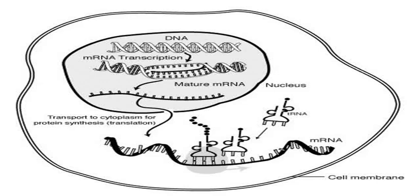The short-lived, unprocessed or partially processed product is termed precursor mRNA, or pre-mRNA. Once completely processed, it is termed mature mRNA. Processing of mRNA differs greatly among eukaryotes, bacteria, and archaea.